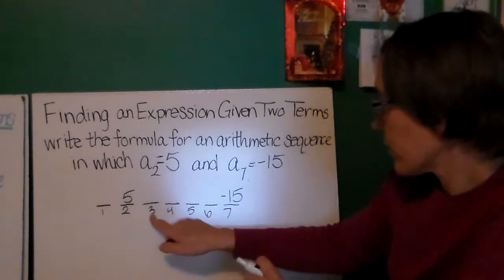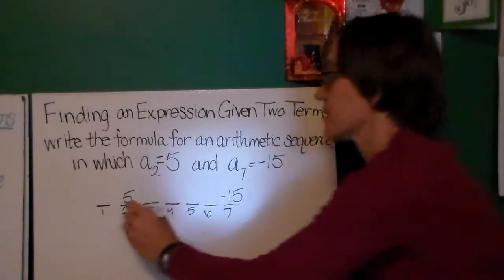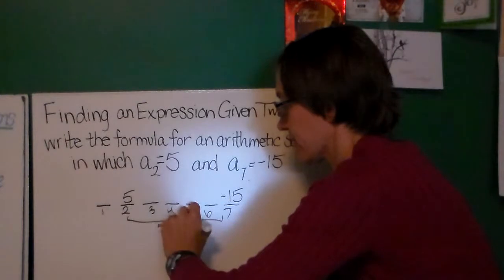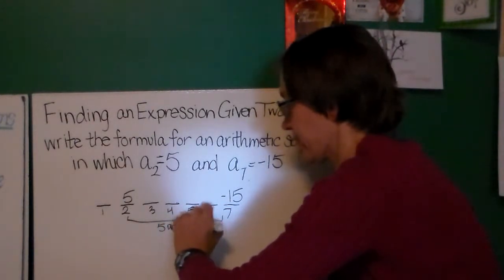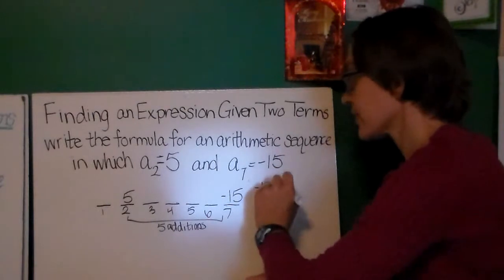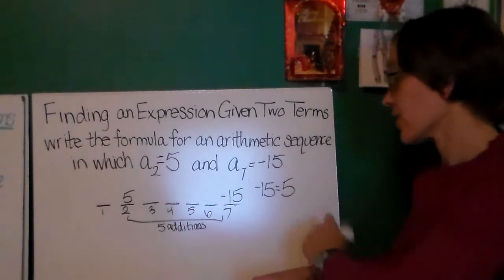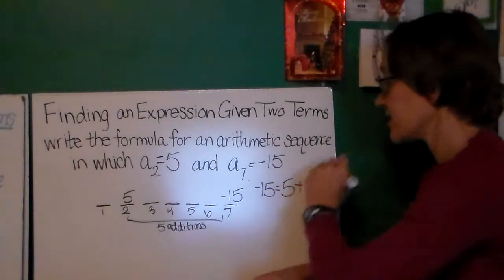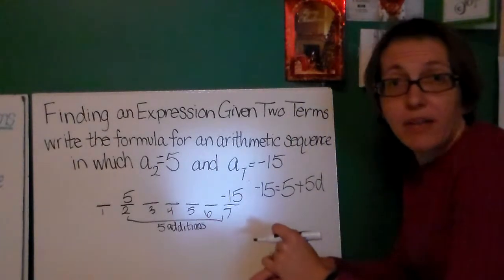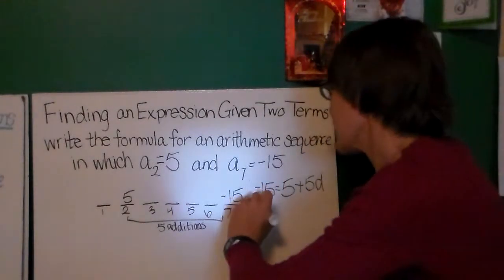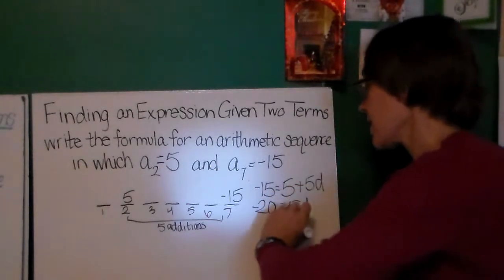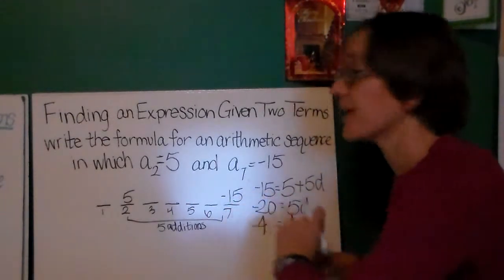Now it looks like five steps. So I've added the same common difference five times. So I could write a little algebra equation to solve this. Negative 15, my seventh term, is equal to 5, my second term, plus 5 times my common difference. Because if I've added something five times, that's the same as saying that's that thing multiplied by 5 and just added once. So I'll go ahead and solve this equation. Subtracting 5 from both sides gives me negative 20. And dividing by 5 gives me d equal to negative 4.